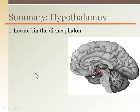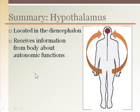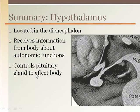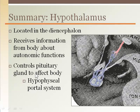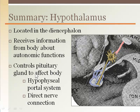The hypothalamus is located in the diencephalon and receives information from the body about autonomic functions. It controls the pituitary gland to cause an effect on the body. Pituitary control occurs through two pathways: releasing and inhibiting hormones through the hypophysial portal system, and direct nerve control to the posterior pituitary gland.